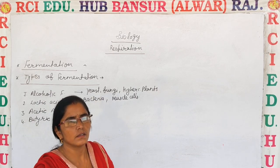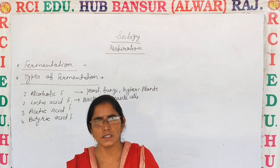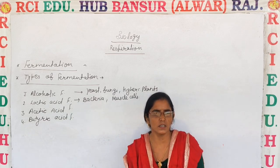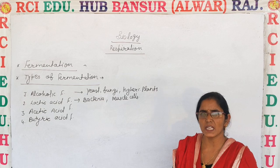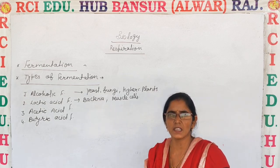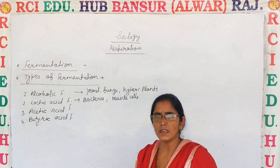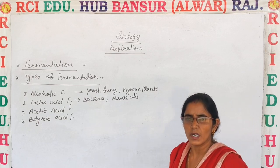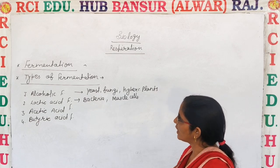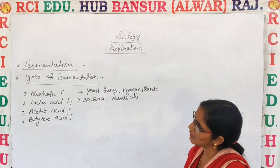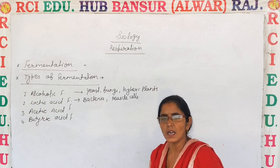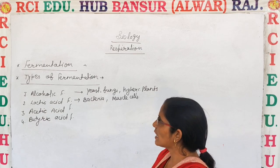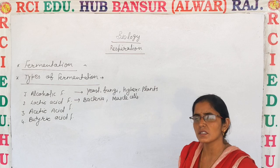Before that, in the last video we discussed about aerobic respiration — how pyruvic acid gets entered into the Krebs cycle, circulates, and forms CO2. Now let's discuss when pyruvic acid reacts in the absence of oxygen, which is known as anaerobic respiration or fermentation.